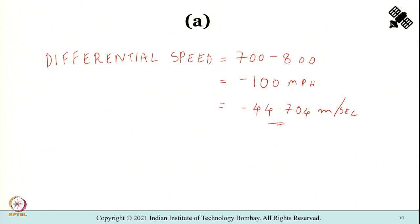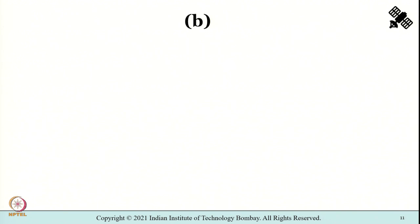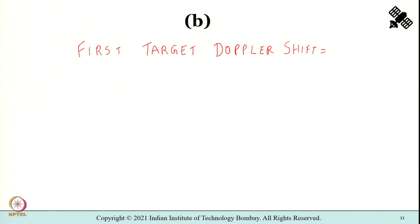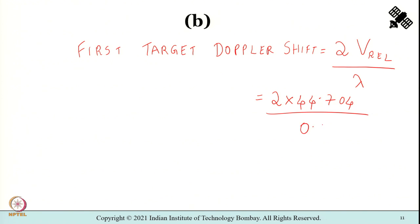The second part asks: what is the Doppler shift of the target? The first target Doppler shift F_Doppler equals 2 times relative velocity divided by lambda, which is 2 times 44.704 divided by 0.03 meters, giving the answer of 2.9 kilohertz.